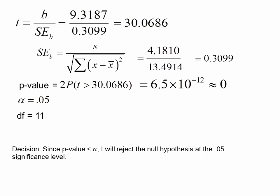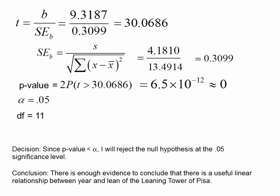So the decision then is, since the P value is less than alpha, we reject the null hypothesis at that 5% significance level. Therefore, our conclusion is that there is enough evidence to conclude that there is a useful linear relationship between year and lean of leaning tower of Pisa. That's it. That's our test.